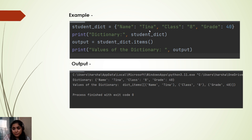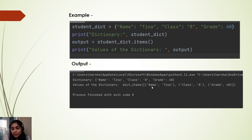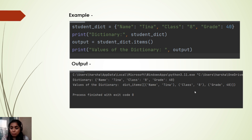Here again we have the student dictionary with keys name, class, grade and values Tina, 8, 14. When we use student_dictionary.items(), we get a list output. Inside the list we have multiple tuples, and in each tuple it is the key and its value — name:Tina, and so on. So it is a list of tuples that we get as output when using the items method.